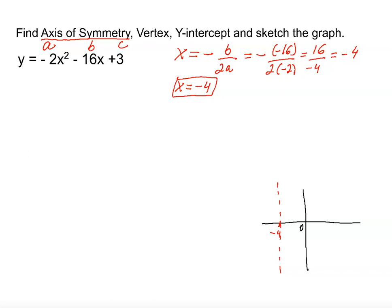So now we're going to find the vertex. I'm going to use the blue color for vertex, and the way I'm going to do that is I'm going to substitute the x value negative 4 into equation, and then I'm going to solve for y.